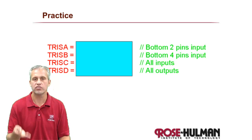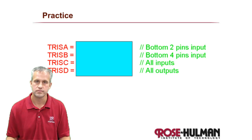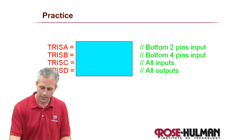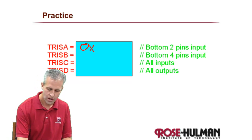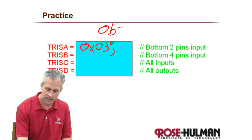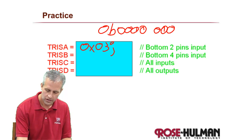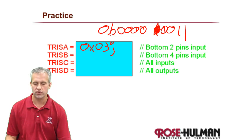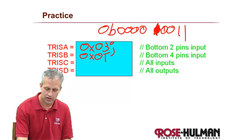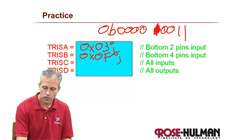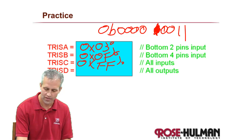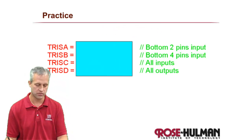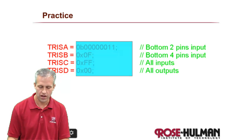Let's practice. If you wanted the bottom two pins as input, they'd just be 0b00000011. If you wanted four inputs at the bottom, that's 0x0F. Most of the time you end up setting the entire port to the same thing. All inputs is 0xFF; all outputs is 0x00.